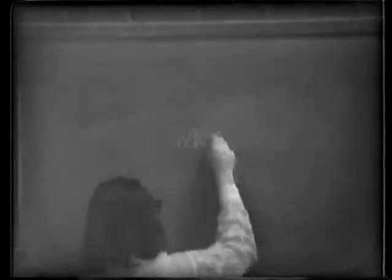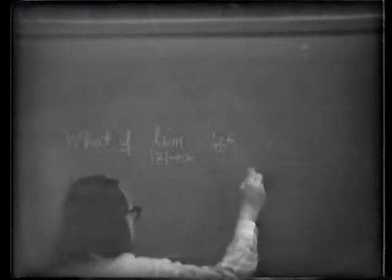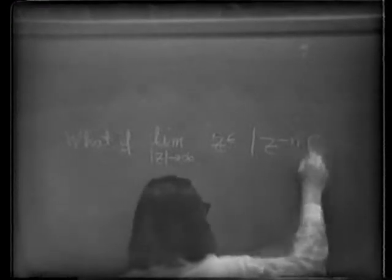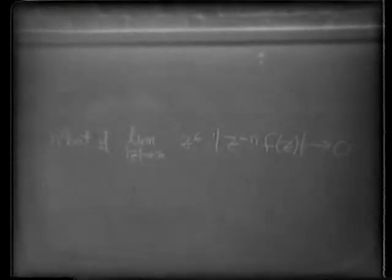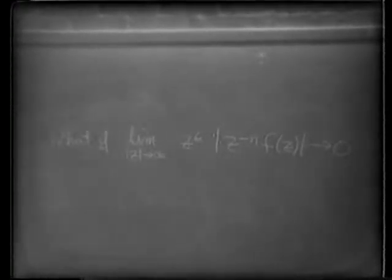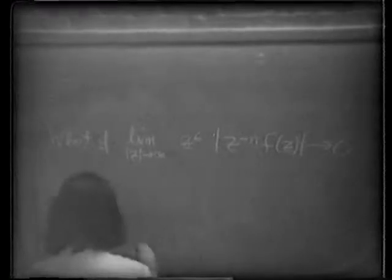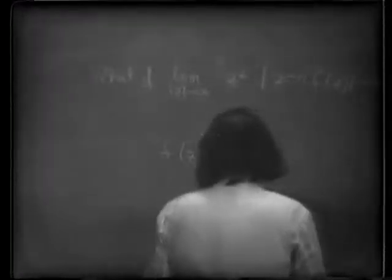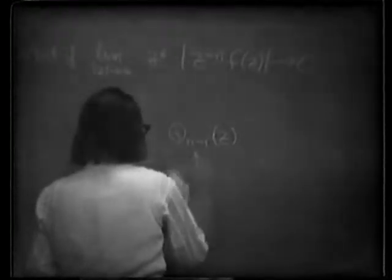What if we have n behavior at infinity? That is to say, what if the limit z goes to infinity of z to the minus n times f(z) goes to zero? The generalization is fairly obvious. In this case, we will have to divide by a polynomial that has a multiple pole, and the final shape of our equation will look something like this: f(z) will be not just a constant but a polynomial Q_{n-1}(z) — a real polynomial of degree n minus 1 — plus some other polynomial P_n(z) over pi, times integral from 0 to infinity dx over x minus z times P_n(x).